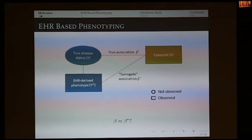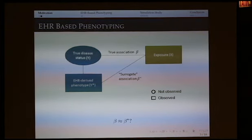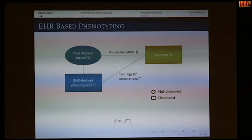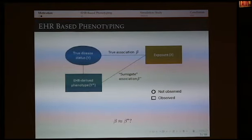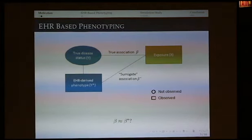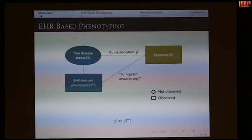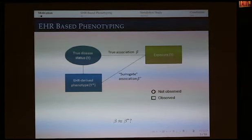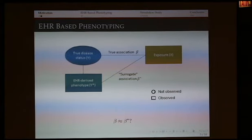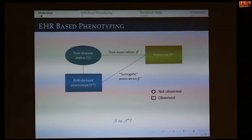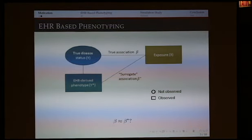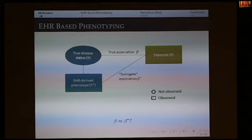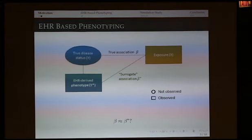I'll use this diagram to illustrate the problem. In an association study, we're interested in the true disease status Y and its relationship with the exposure X — an association indicated by regression coefficient beta. However, in EHR data we do not observe the true disease status; we only observe the EHR-derived phenotype Y*. If you ignore the misclassification and fit a model between Y* and X, you get a surrogate association beta*. The question is: can we use beta* to approximate the true beta, and what are the statistical issues for doing so?